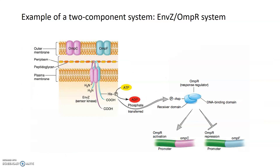This is a summary figure of the same pathway from the Prescott textbook. Both porin proteins, OMPC and OMPF, exist in the outer membrane. The sensor kinase ENVZ is in the plasma membrane with sensor regions in the periplasmic space that can sense high osmolarity, phosphorylate themselves, and then transfer that phosphate to the response regulator OMPR, so that it can activate transcription of OMPC and stop transcription of OMPF under high osmolarity conditions.